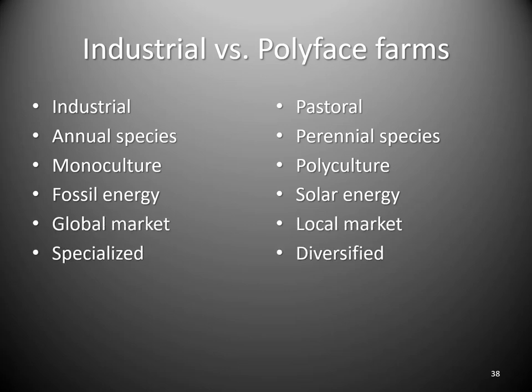Industrial agriculture produces for the global market — the scale of production is huge and the system is driven by profits. Whatever is most profitable is what's done, and unfortunately this is not what is best for the environment or social equality. For example, in Food Inc., ICE had a deal with Smithfield where they would arrest undocumented workers but only 15 workers per day so as not to disrupt Smithfield's production line. The global market allows for these externalized costs — it's all about profit and doing whatever is cheapest.